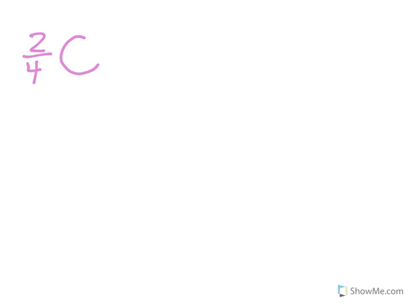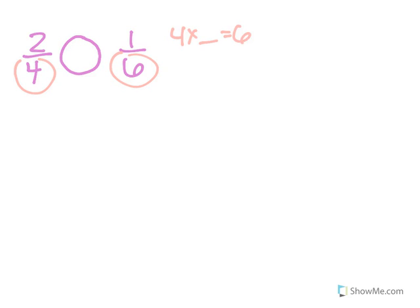Okay, so let's do one together. I'm going to have you pause this at certain points to practice. So we're going to do 2 fourths and 1 sixth. I check my denominators. Is there anything I can multiply by them to get to each other? 4 times something equals 6? No. 6 times something equals 4? No. So my strategy number 1 does not work, so I need to try my third strategy.